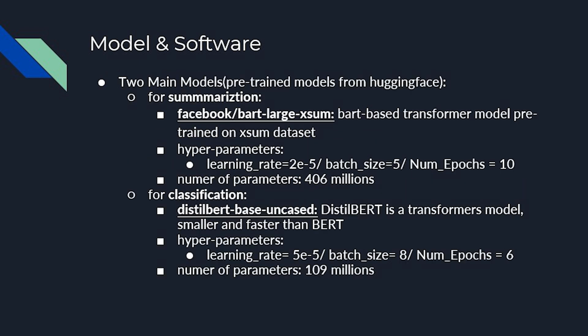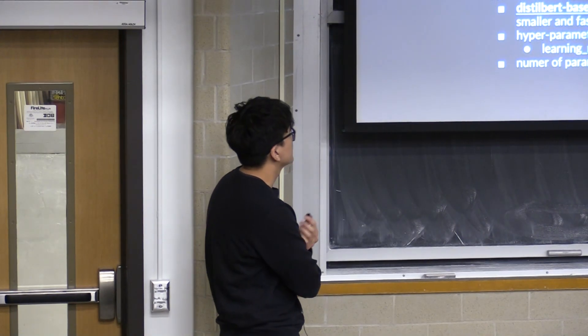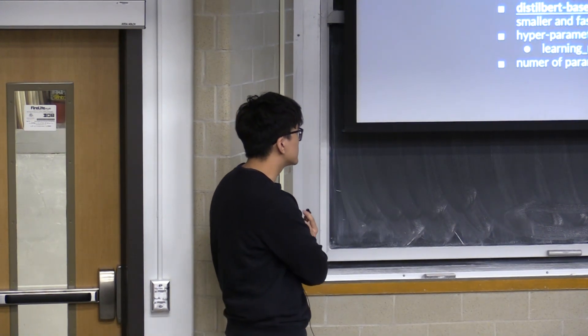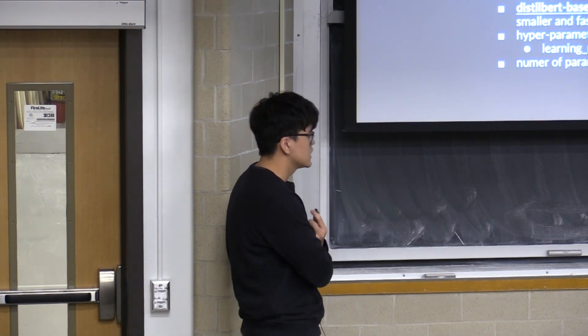We have two main models, both pre-trained models from Hugging Face. For summarization, we use BART large XSum from Facebook, which is a transformer-based model pre-trained on extreme summarization datasets. For classification, we use DistilBERT uncased, which is a smaller and faster version of BERT. We also note the hyperparameters and number of parameters of the models.